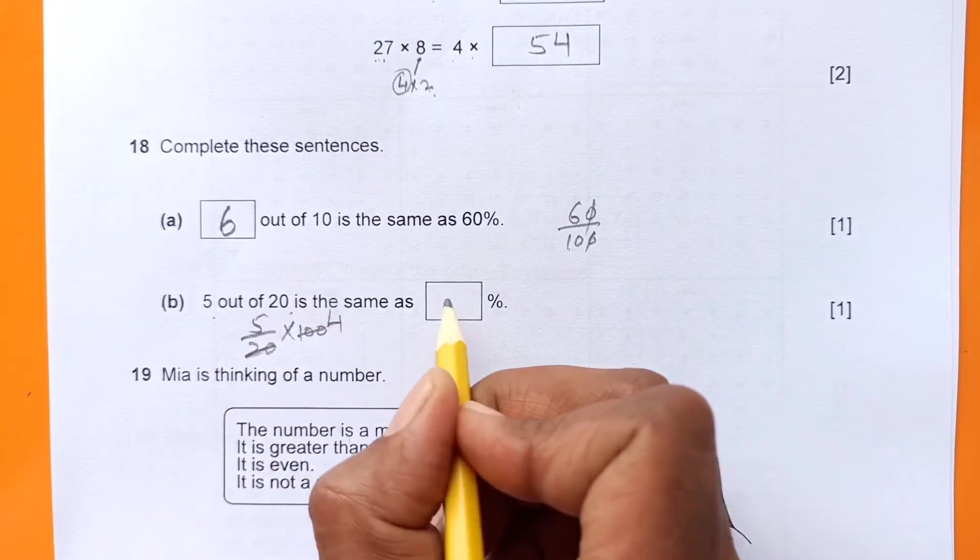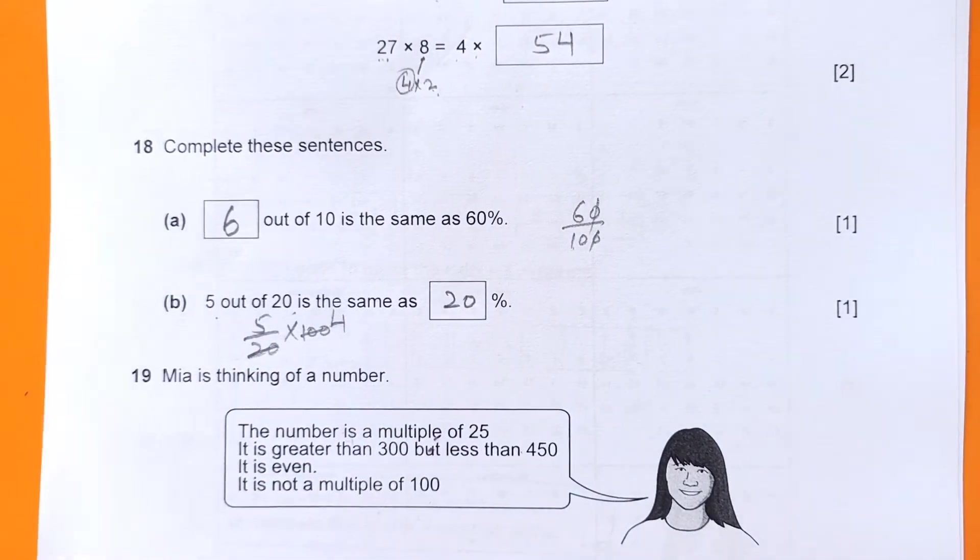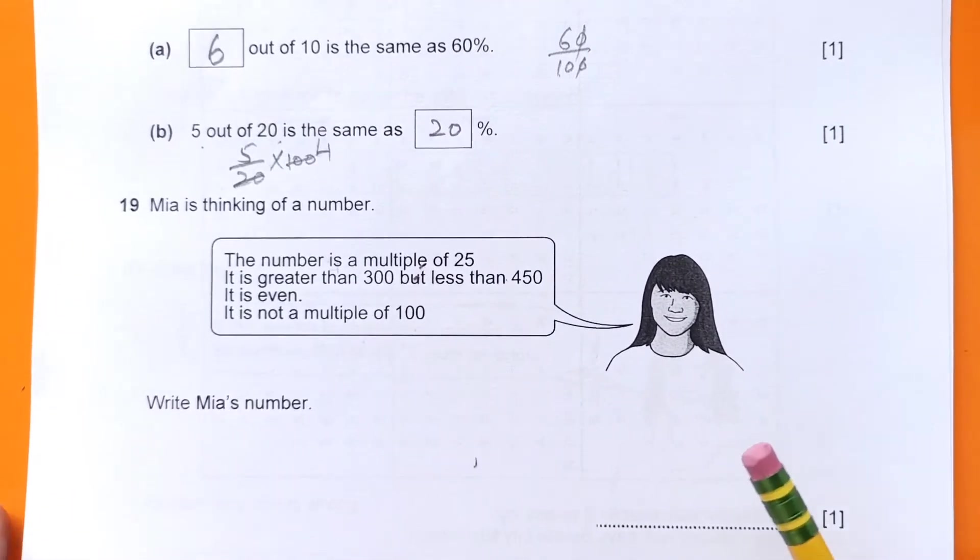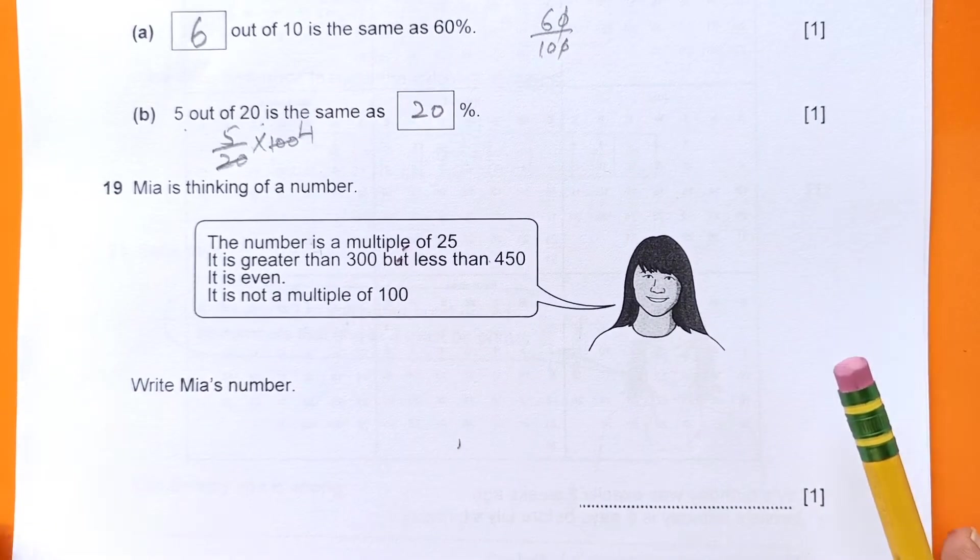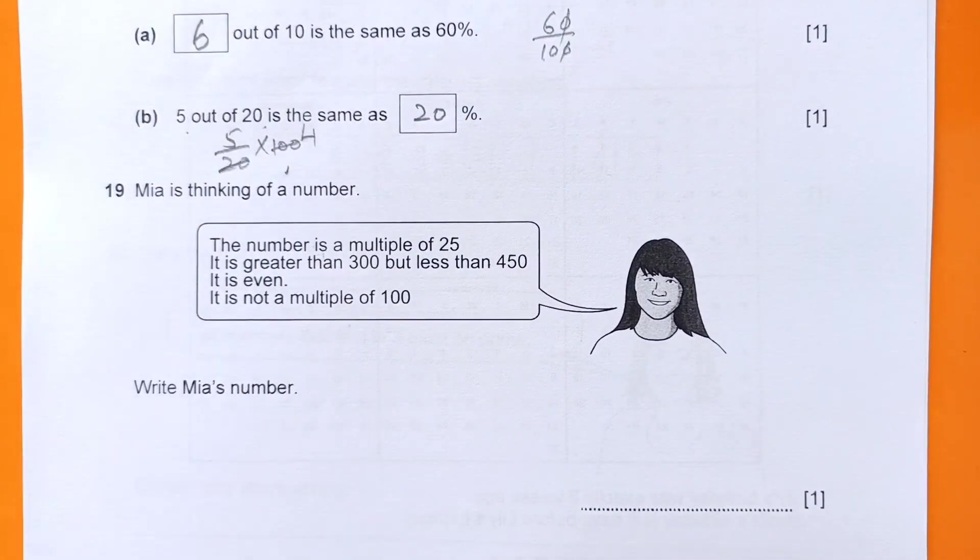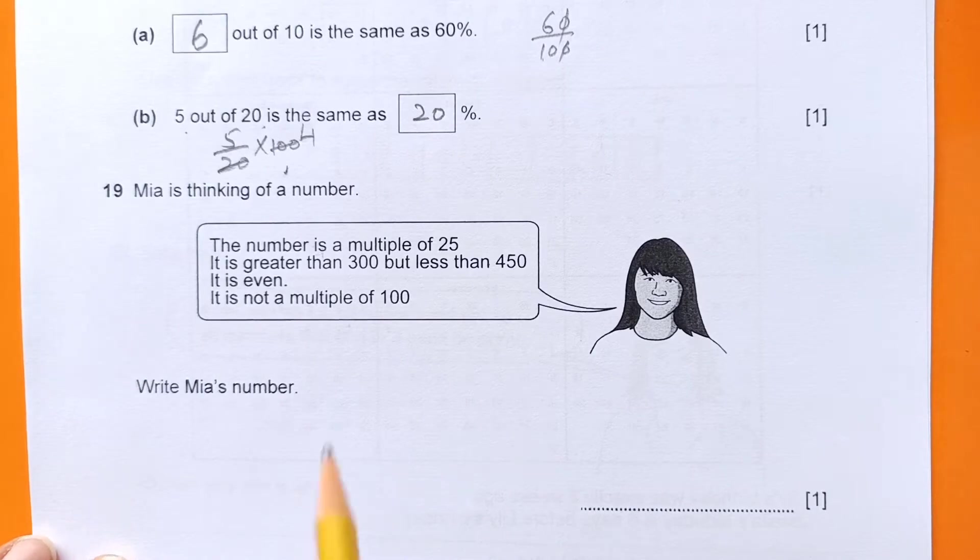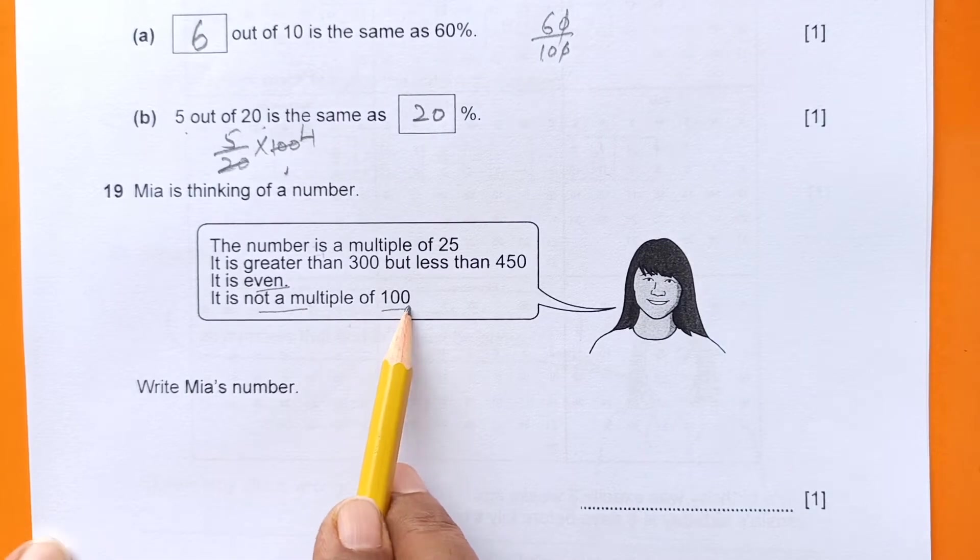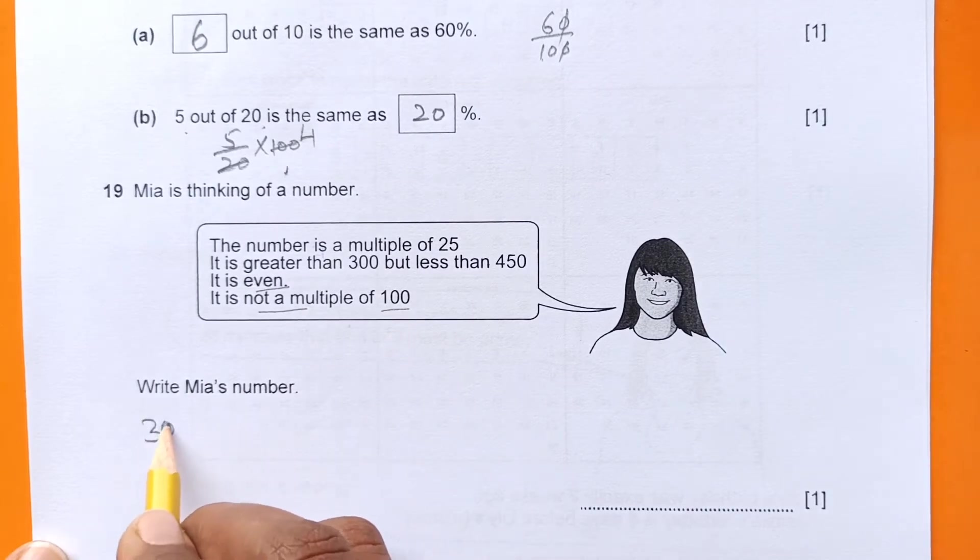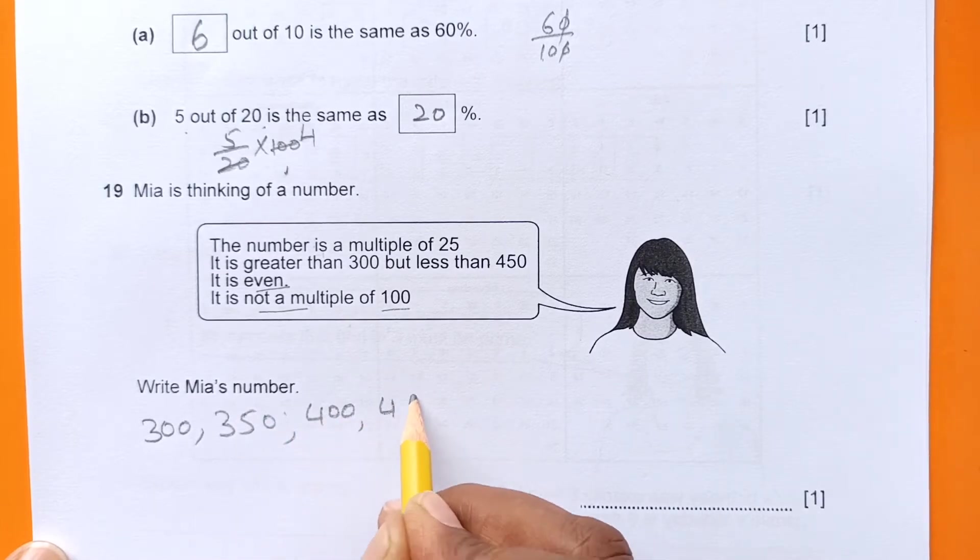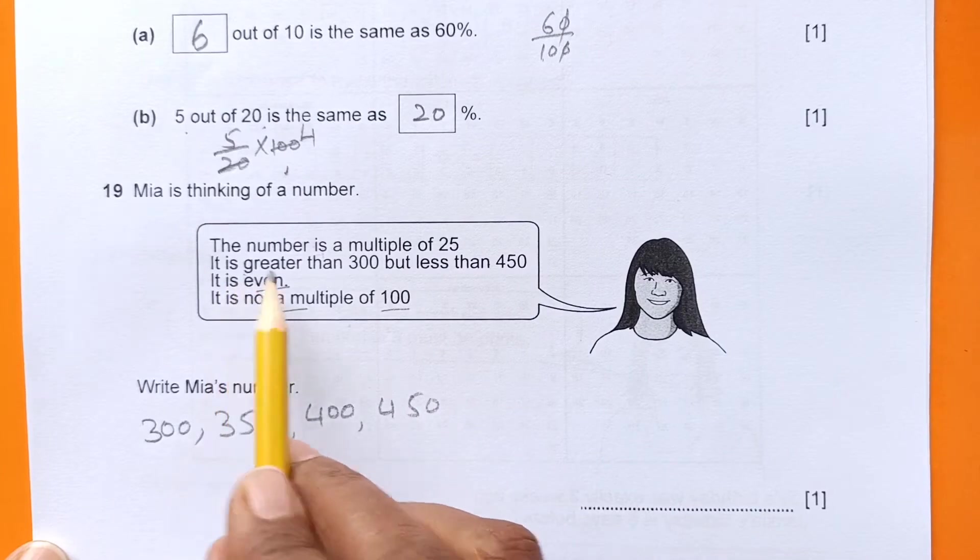25 times 4 is 100, and 5 times 4 is 20, so it's the same. Now number 19: Mia is thinking of a number. The number is a multiple of 25, it's greater than 300 but less than 450, it's even, and it's not a multiple of 100.